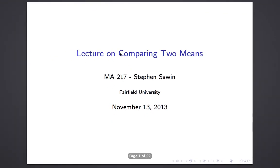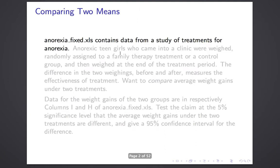This is the lecture on comparing two means. This is going to be a quite short lecture, and the reason it's short is because there is absolutely nothing new. Every single thing I say will either be an obvious generalization of what we said about confidence intervals and hypothesis testing for a single mean, or an obvious generalization of what we said for hypothesis testing and confidence intervals comparing two proportions. So we get to see all those ideas in a combined context.